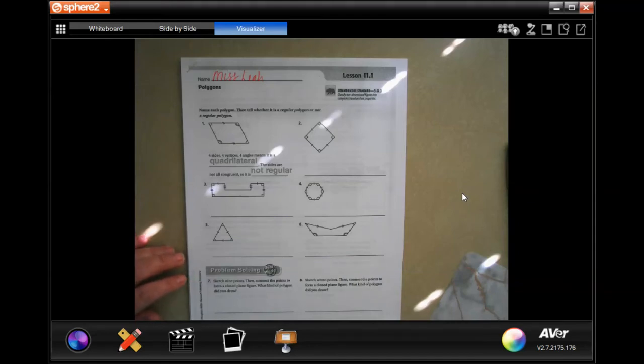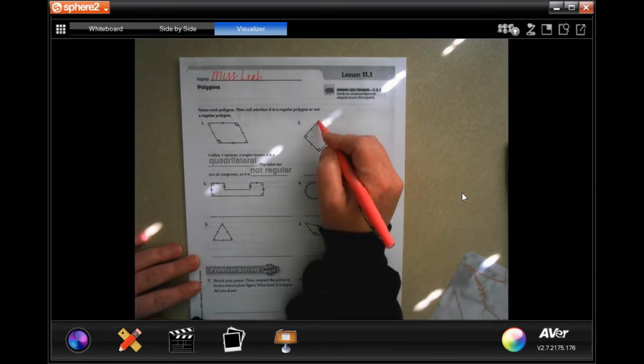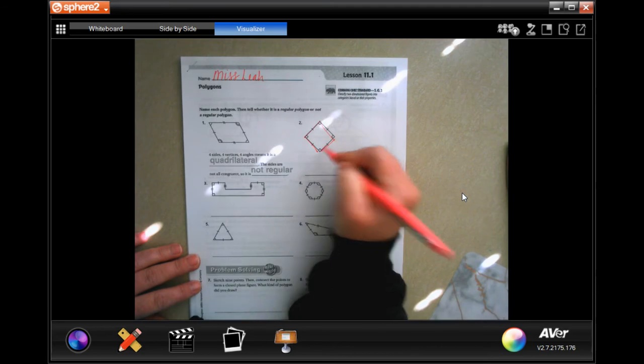Hey, welcome to fifth grade chapter 11 lesson one. We're going to go ahead and get started with number two. So this four sides makes it a quadrilateral.